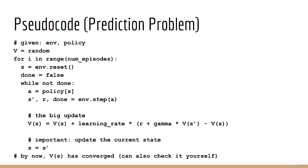Next, we do the big update. The temporal difference update we've been discussing throughout this lecture. Finally, and this is important not to forget, we must update the variable s for the next iteration of the loop. What is currently the next state s' will become the current state s in the next iteration. Lastly, when the loop is complete, V(s) has converged.